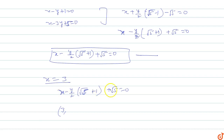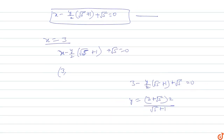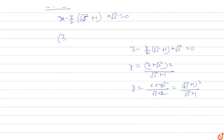Put x = 3 into the equation: 3 - y/(2√5) + 1 + √5 = 0. Solving for y: y = (3 + √5) × 2 / (√5 + 1), which gives (6 + 2√5) / (√5 + 1). The numerator factors as (√5 + 1)², so dividing gives y = √5 + 1. The incenter is (3, √5 + 1).